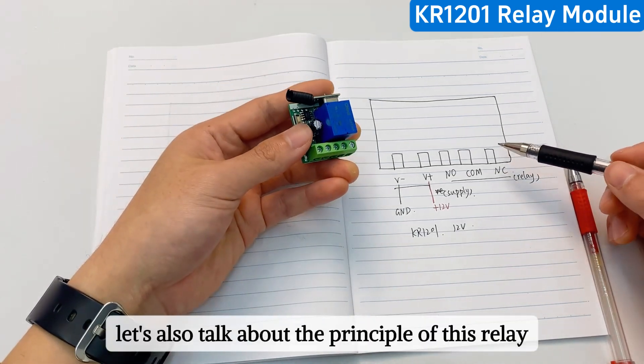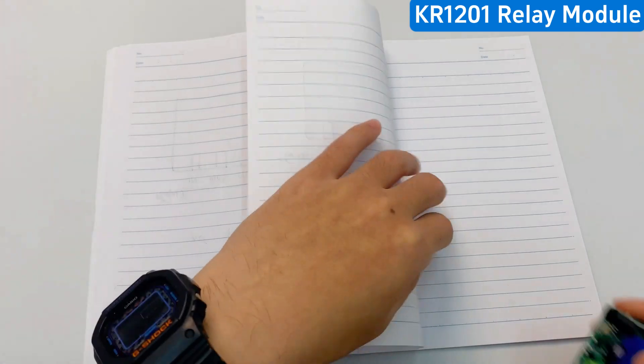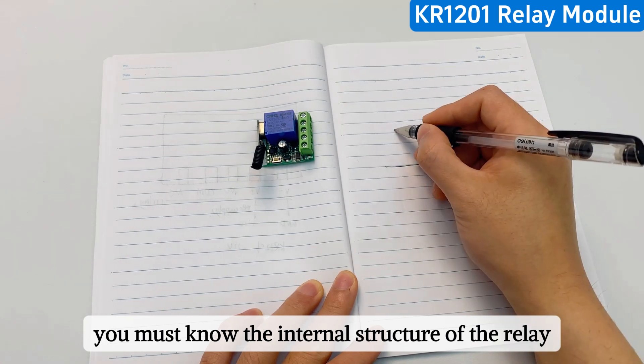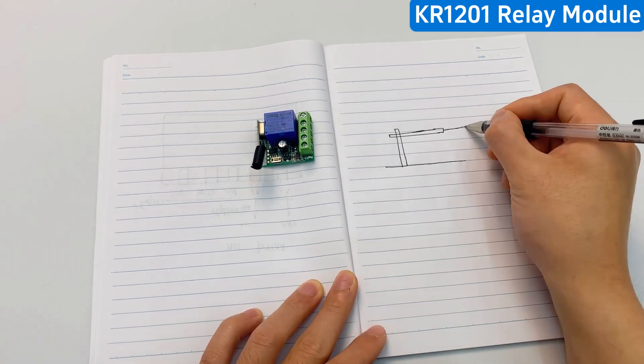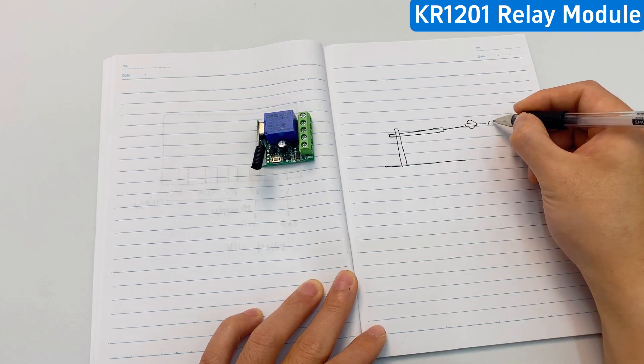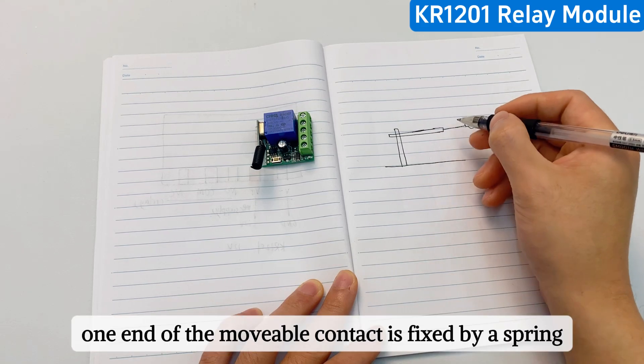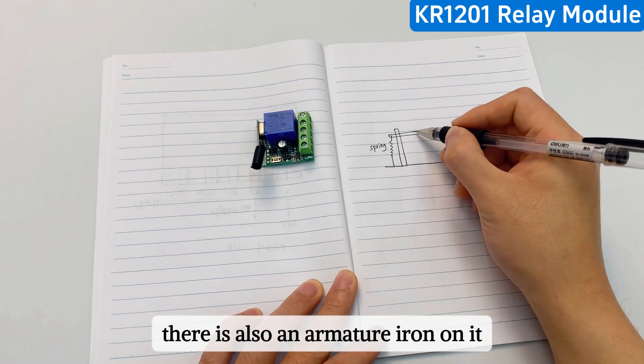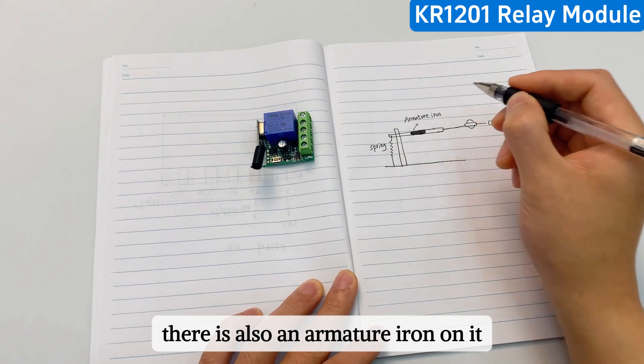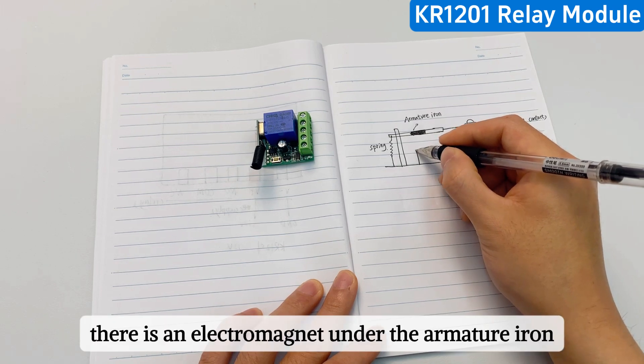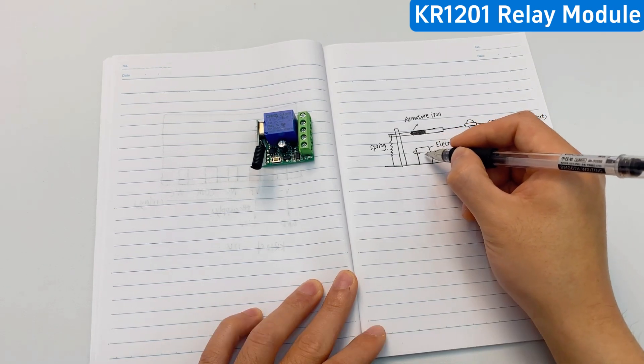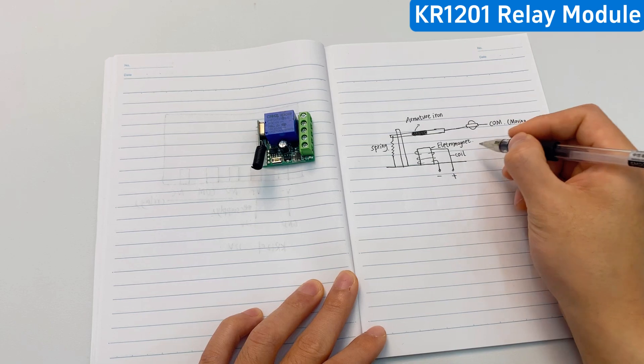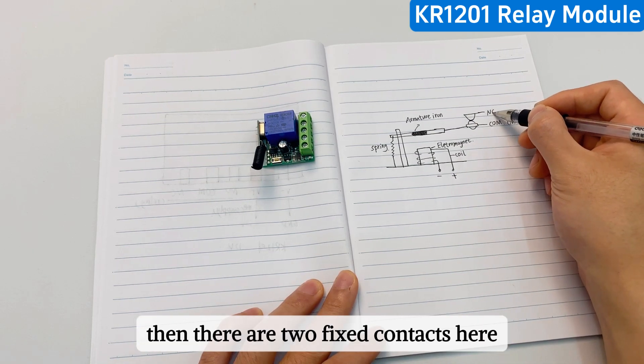By the way, let's also talk about the principle of this relay. If you want to understand the principle of the relay, you must know the internal structure of the relay. It's roughly like this. The com end is a movable contact. One end of the movable contact is fixed by a spring. There is also an armature iron on it. There is an electromagnet under the armature iron. The electromagnet is wound around the coil. Then there are two fixed contacts here.